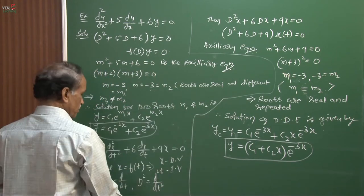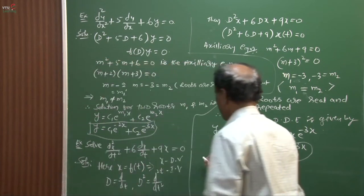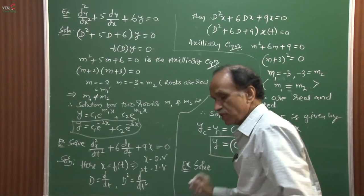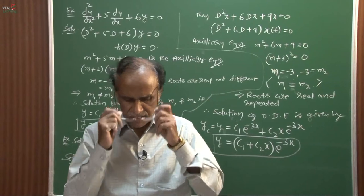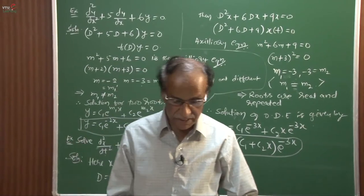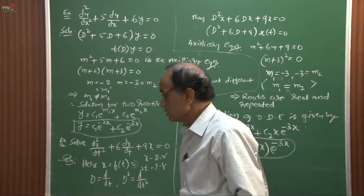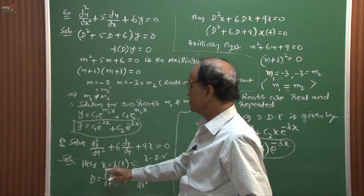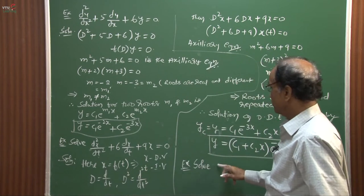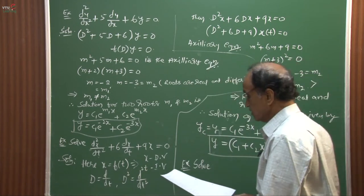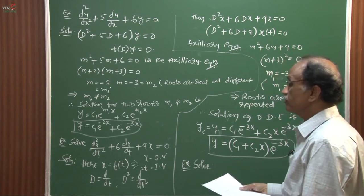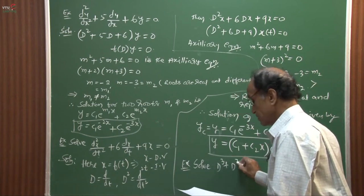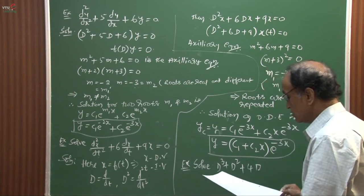Now for Case 3 — imaginary roots — I will write the formula for imaginary roots. I will take the problem (D³ + D² + 4D + 4) operating on y = 0. To understand all three cases individually, you need to write the solution procedures for repeated roots in Case 1, Case 2, and Case 3.